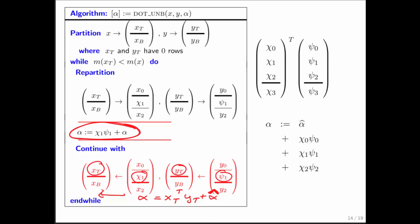So what do we have now? Now, we have that at this point in the algorithm, alpha is equal to x top y top plus alpha hat, and at the bottom. Now, when we initially partition our vectors x and y, notice that at this point in the algorithm, it is also the case that alpha is equal to x top transpose y top plus alpha hat.